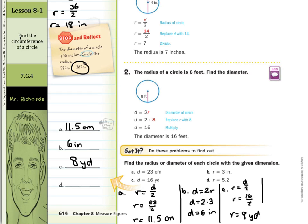And lastly, in D, the radius is 5.2 units of some sort, and we're looking for the diameter. So the diameter is going to equal 2 times the radius — 2 times 5.2 — so our diameter is 10.4. In summary, if you're given the diameter and you need to find the radius, you'll be dividing by 2. If you're given the radius and you need to find the diameter, you'll be multiplying by 2.